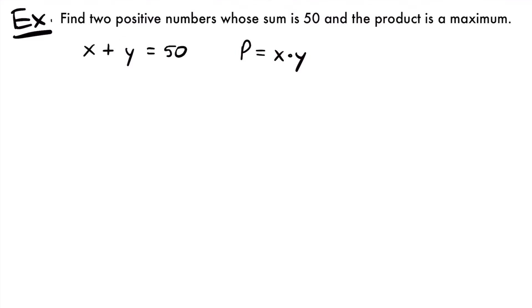Now, what's our next step? We want to find the two numbers that maximize the product — we want it to be the largest it can possibly be given that the sum is 50. Since the product equation is what we want to maximize, we'll take its derivative. But it's defined in terms of two variables, so we need to reduce it to one variable using our constraint. The equation x plus y equals 50 is our constraint because it contains a fixed value, 50.